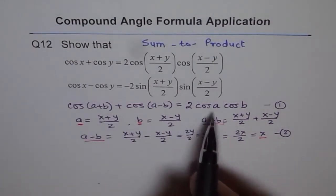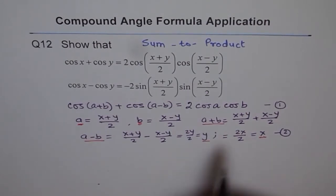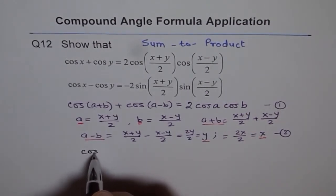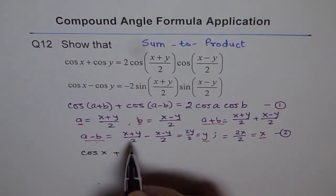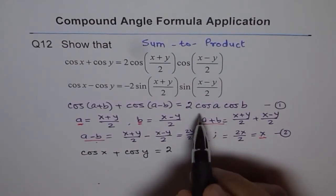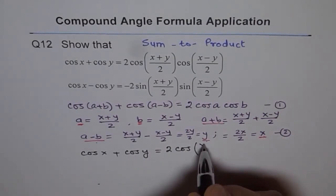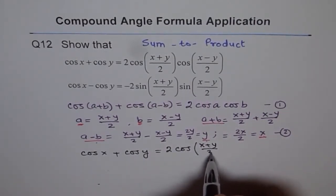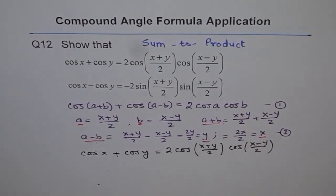So let's put these values back into our original equation. So cos a plus b, a plus b is x for us, so it becomes cos of x plus cos a minus b. a minus b is y for us, cos of y equals to 2 times. And instead of a, we started with x plus y by 2. We get 2 times cos of x plus y by 2 times cos of x minus y by 2. And we get our result. So that is the proof for this result.